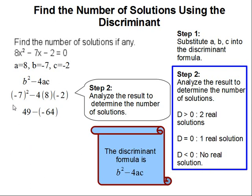So simplifying this, you get 49 minus 4 times 8 times negative 2, that gets you negative 64. And 49 minus negative 64 becomes plus 64, and that gets us 113.